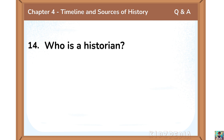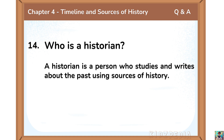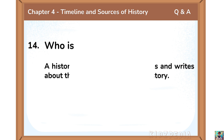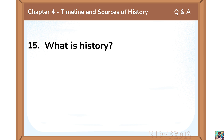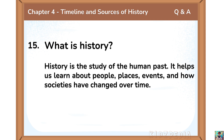Who is a historian? A historian is a person who studies and writes about the past using sources of history. What is history? History is the study of the human past. It helps us learn about people, places, events and how societies have changed over time.